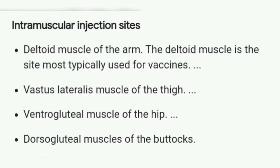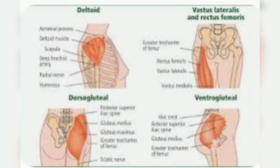What are all the sites of IM injection? The first one is the deltoid muscles of the arm, which is the site most typically used for vaccinations. Second one is the vastus lateralis muscles of the thigh, third one is the ventrogluteal muscles of the hip, and fourth one is the dorsogluteal muscles of the buttocks. These are the four important IM injection sites.